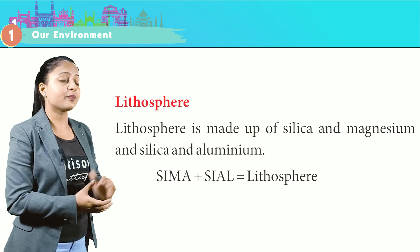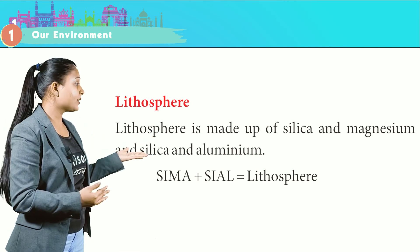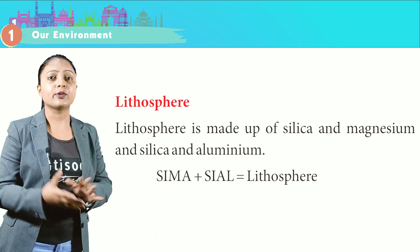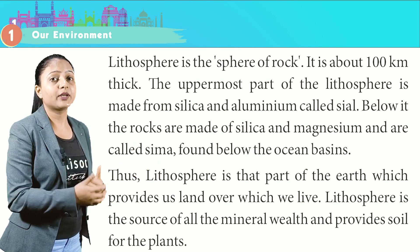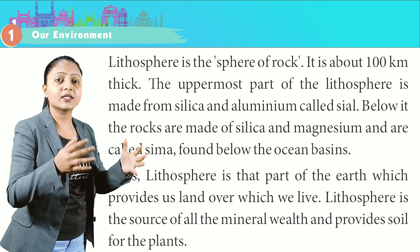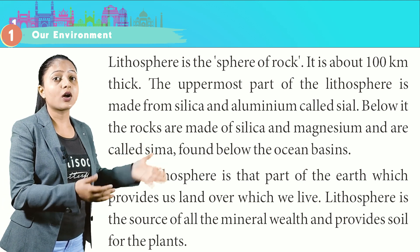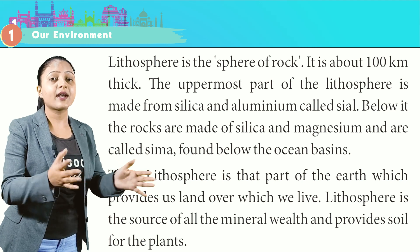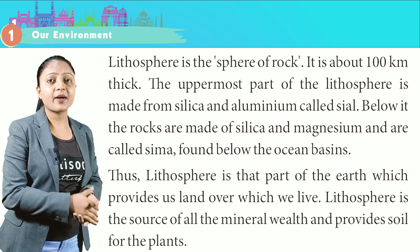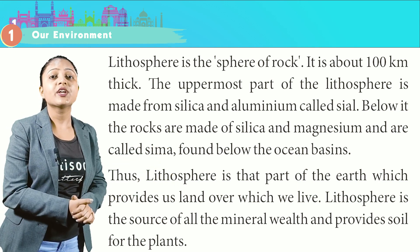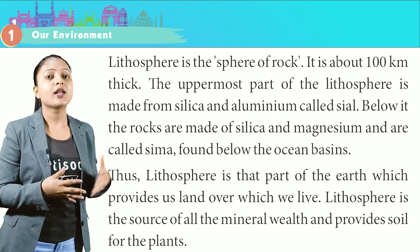Lithosphere. The lithosphere is made up of silica and magnesium (Sima) and silica and aluminum (Sial). It is the sphere of rock, about 100 km thick. The uppermost part is made of silica and aluminum, called Sial, while below it the rocks are made of silica and magnesium, called Sima, found below the ocean basins. The lithosphere provides us the land on which we live and is the source of all mineral wealth and soil for plants.